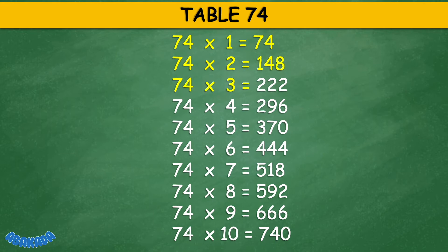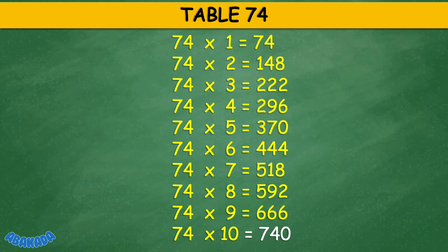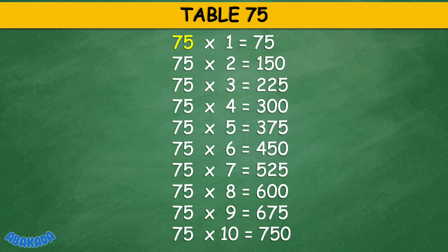Table 74: 74 times 1 equals 74, 74 times 2 equals 148, 74 times 3 equals 222, 74 times 4 equals 296, 74 times 5 equals 317, 74 times 6 equals 444, 74 times 7 equals 518, 74 times 8 equals 592, 74 times 9 equals 666, 74 times 10 equals 740.